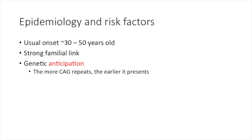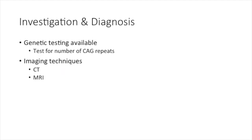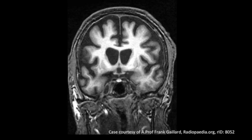What kind of tests and investigations can we perform in Huntington's to find out before symptoms develop? There are genetic tests available to count the number of CAG repeats on chromosome 4. These tests could be useful in patients who have a strong family background of Huntington's and help identify those at risk before symptoms show. Once symptoms do develop, there are diagnostic tools such as CTs and MRIs to look at the patient's brains.